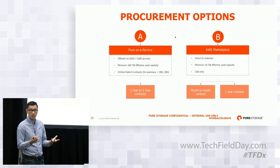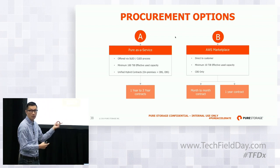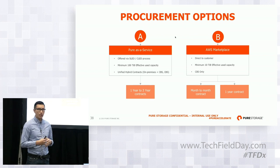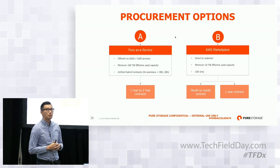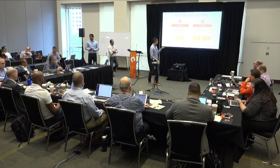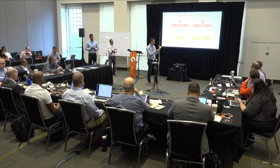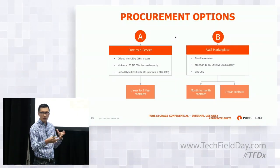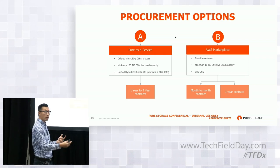Customers who have pre-commits with AWS already can also use the Marketplace to go through one single vendor. It's a lower entry point — 10 terabytes to start. Cloud Snap is a separate feature that can be used with Cloud Block Store; the only additional cost is the AWS S3 storage used for offload. Customers can also convert from an AWS Marketplace subscription to a Pure as a Service long-term contract for better economics.